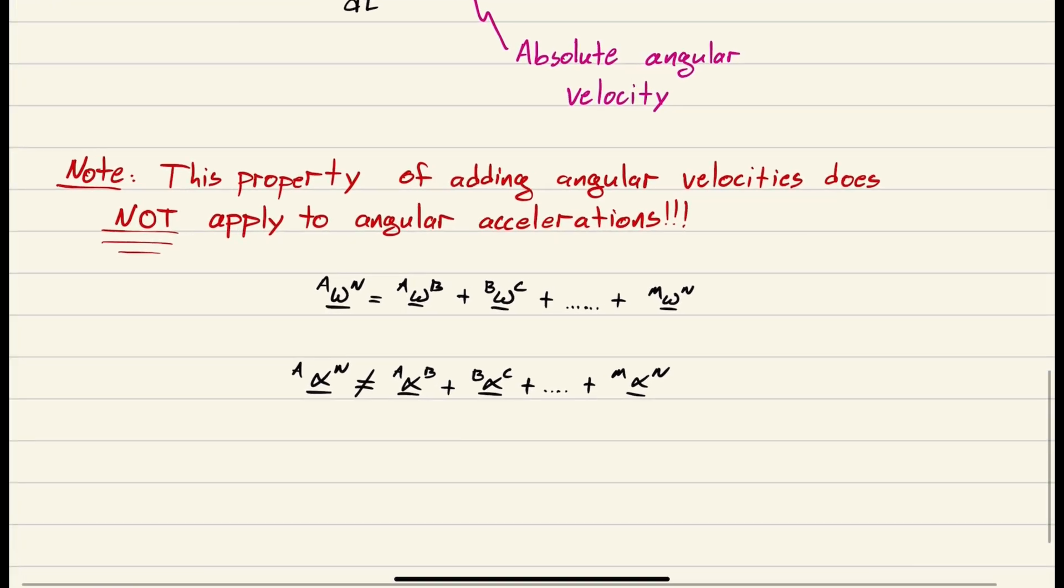This property of adding angular velocities does not apply to angular accelerations. This is very important, and many people get this wrong. If we had many frames A, B, C, D, F, G, all the way up to N, we can do backstepping: omega N to M plus M to L, et cetera, down to B to A, giving us omega N to A. We're allowed to do that with angular velocities. We cannot do that with angular accelerations. You cannot do that. It's not allowed, it's not correct. But you're good for angular velocities, which is what we'll use it for most of the time.